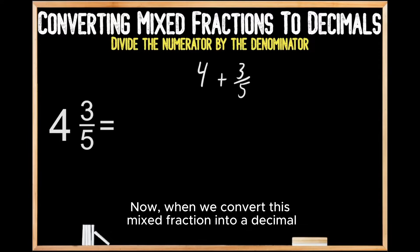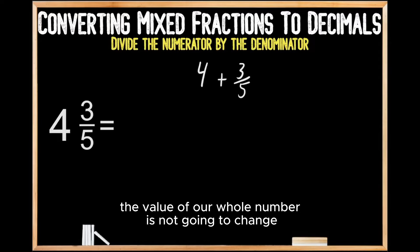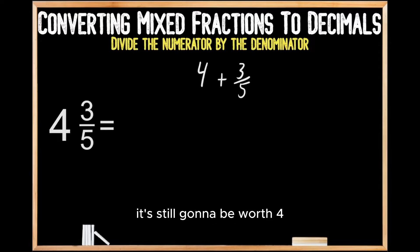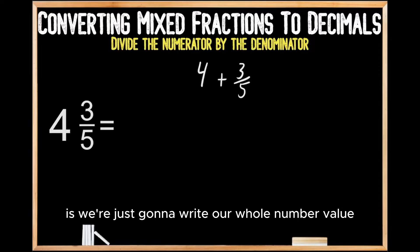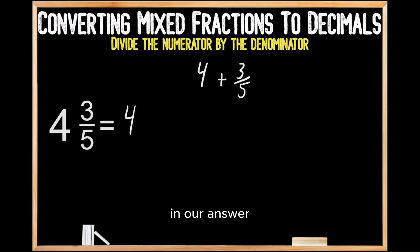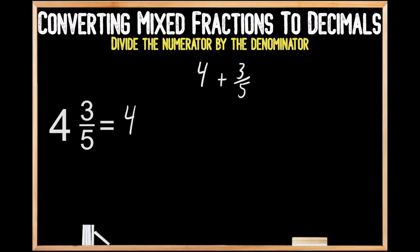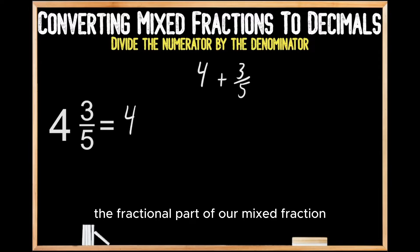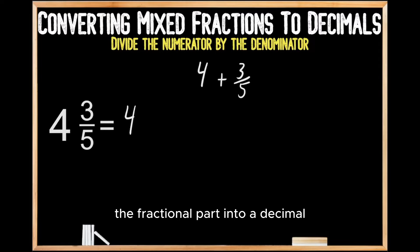When we convert this mixed fraction into a decimal, the value of our whole number is not going to change — it's still going to be worth 4. So the first thing we're going to do is write our whole number value in our answer because it's not going to change. That leaves us with the fractional part, and this is where we're going to be converting it into a decimal.